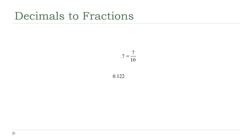Let's look at a slightly bigger example, something like 0.122. To make this into a fraction, remember that the first decimal place is tenths, then hundredths, then thousandths. So 0.122 is 122 thousandths. But we're not quite done — remember to check if it reduces. 122 and 1000 are both even, so divide both by 2: 122 divided by 2 is 61, and 1000 divided by 2 is 500. So 0.122 equals 61 over 500. That's really all there is to converting a terminating decimal into a fraction.